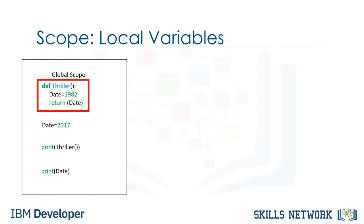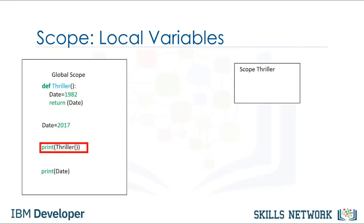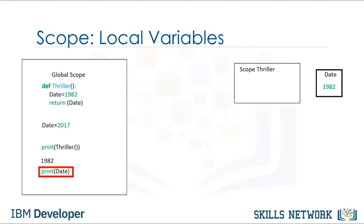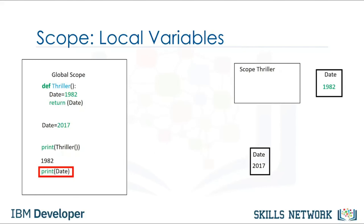Consider the function thriller where the local variable date is set to 1982 and the global variable date is set to 2017. When we call the function, we create a new scope. Within that scope, the value of date is set to 1982. If we call the function, it returns the value of date in the local scope — in this case 1982. When we print in the global scope, we use the global variable value — the global value is 2017, therefore the value is set to 2017.